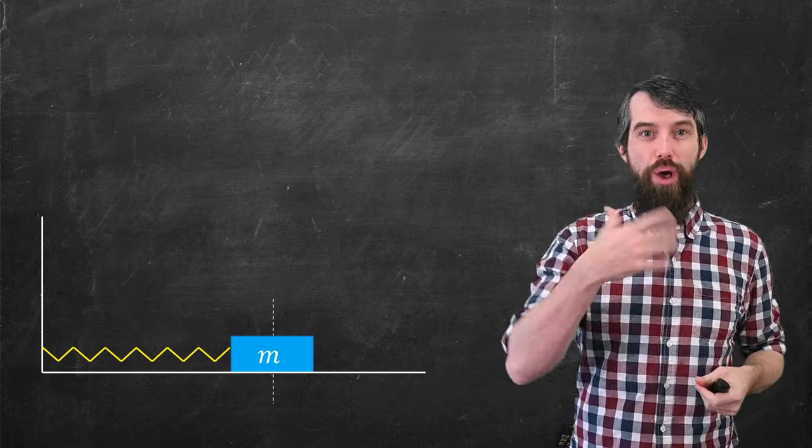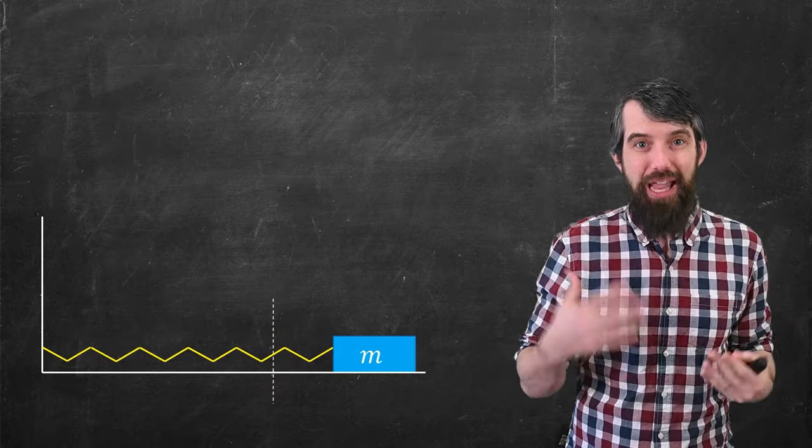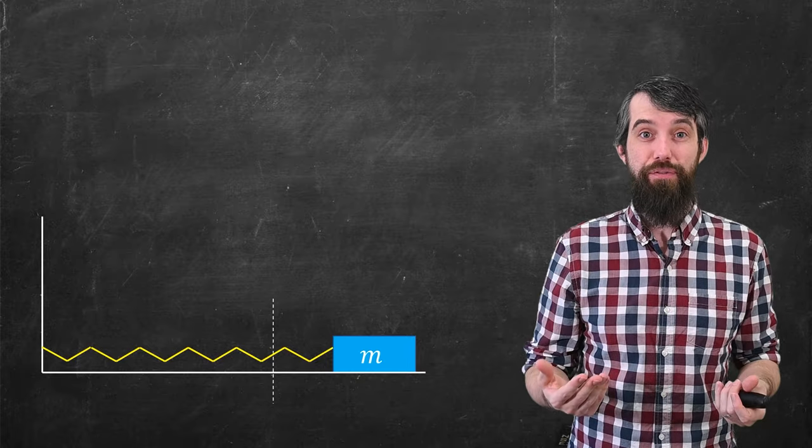So what were we talking about? We had a mass here. It was on a spring. It could be extended from an equilibrium position. And if you let go, you can imagine that it would oscillate back and forth. And let's try to understand the forces that were involved.